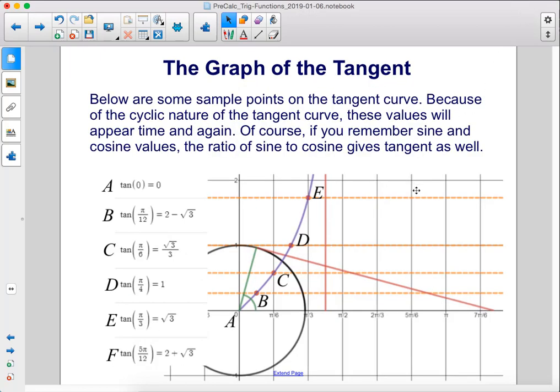Below are some sample points on the tangent curve. Because of the cyclic nature of the tangent curve, these values will appear time and again. Of course, if you remember sine and cosine values, the ratio of sine to cosine gives tangent as well.